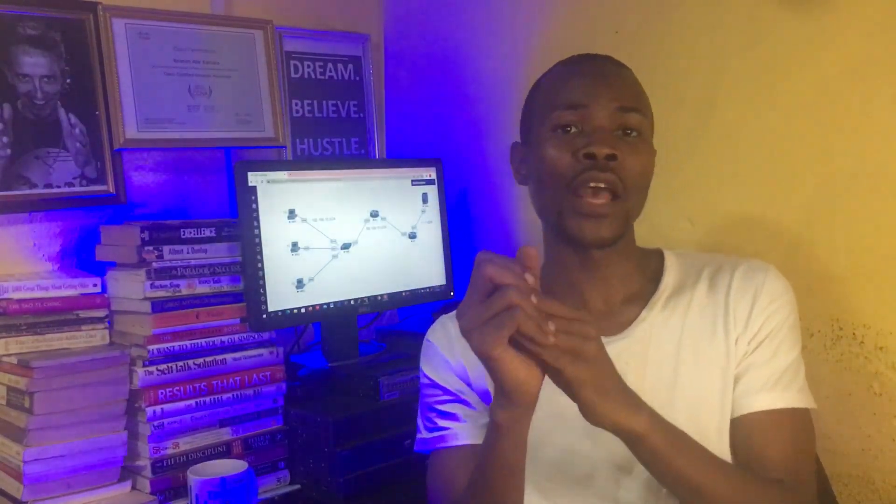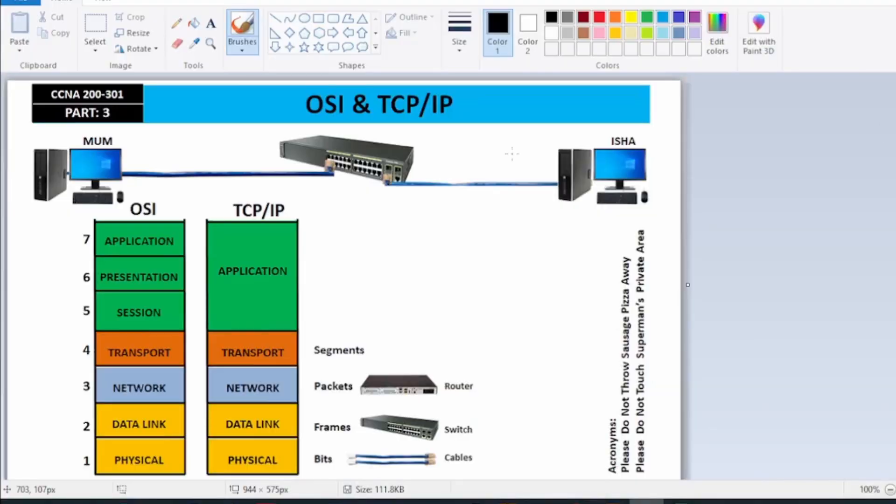With TCP/IP, when something is an application problem you know exactly it's the Application layer. The four bottom layers — Transport, Network, Data Link, and Physical — are where we network engineers sit and look at things. I love the TCP/IP model because it makes troubleshooting very easy for network engineers.